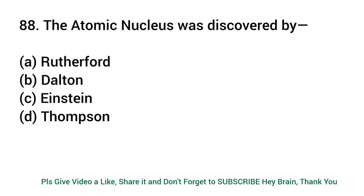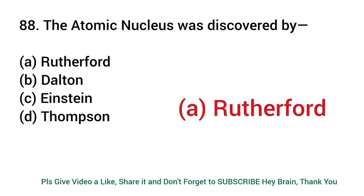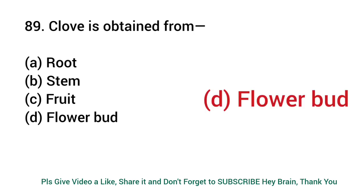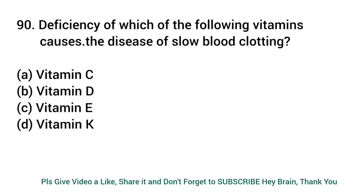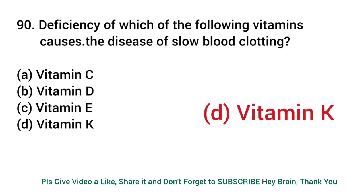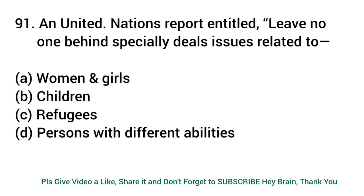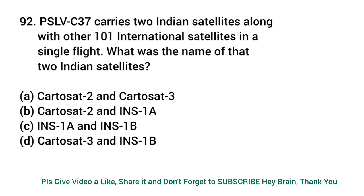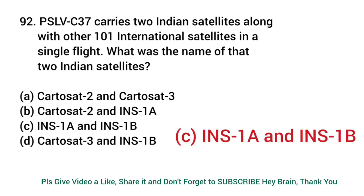The atomic nucleus was discovered by? Answer: Rutherford. Clove is obtained from? Answer: Flower bud. Deficiency of which of the following vitamins causes the disease of slow blood clotting? Answer: Vitamin K. A United Nations report entitled 'Leave No One Behind' especially deals with issues related to? Answer: Women and girls. PSLV-C37 carries two Indian satellites along with 101 international satellites in a single flight — what were the names of those two Indian satellites? Answer: INS-1A and INS-1B.